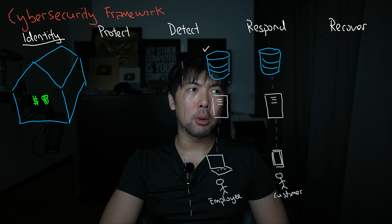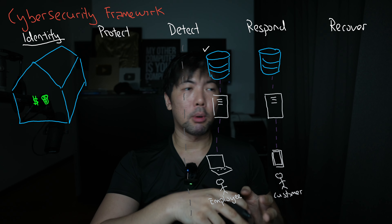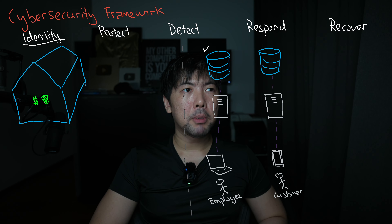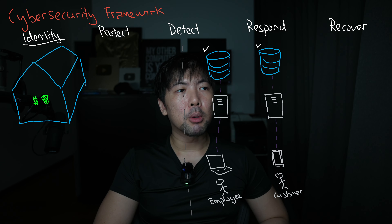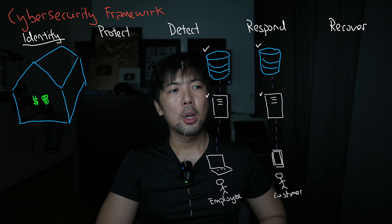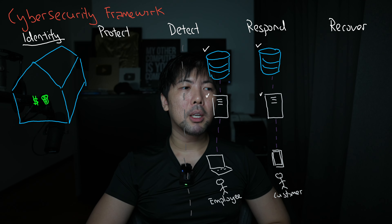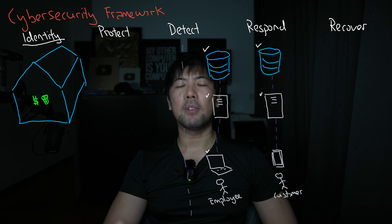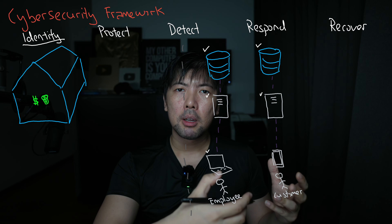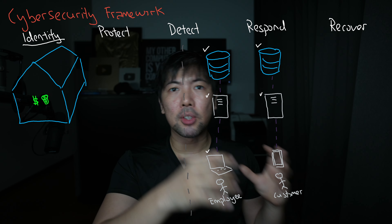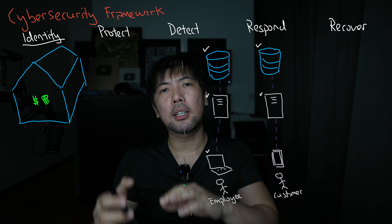On the IT side, you have databases that can store personal information, business information, financial information, and proprietary data — you must be able to identify where your crown jewels are. You also need to identify the compute resources and servers you have, such as one for internal employees and one for customers, as well as how many laptops, mobile devices, or tablets have been issued to users, so you can think about what protection mechanisms to introduce later.